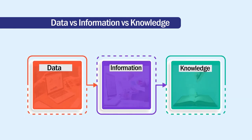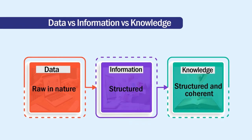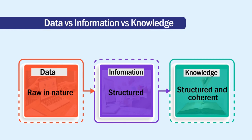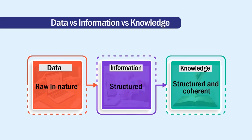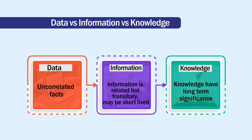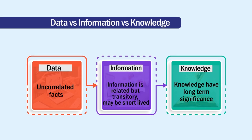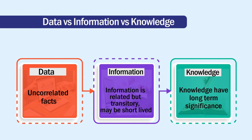Now, data versus information and knowledge: data is typically raw, whereas information has some structure in it, and knowledge is structured and coherent. We have to take conscious decisions and bring in good knowledge that is useful and coherent. Uncorrelated facts are data. Information is related by transitory context and may be short-lived, but knowledge has long-term significance. It stays with us for a longer time and across different perspectives — we are able to solve many different cases or problems in different situations.